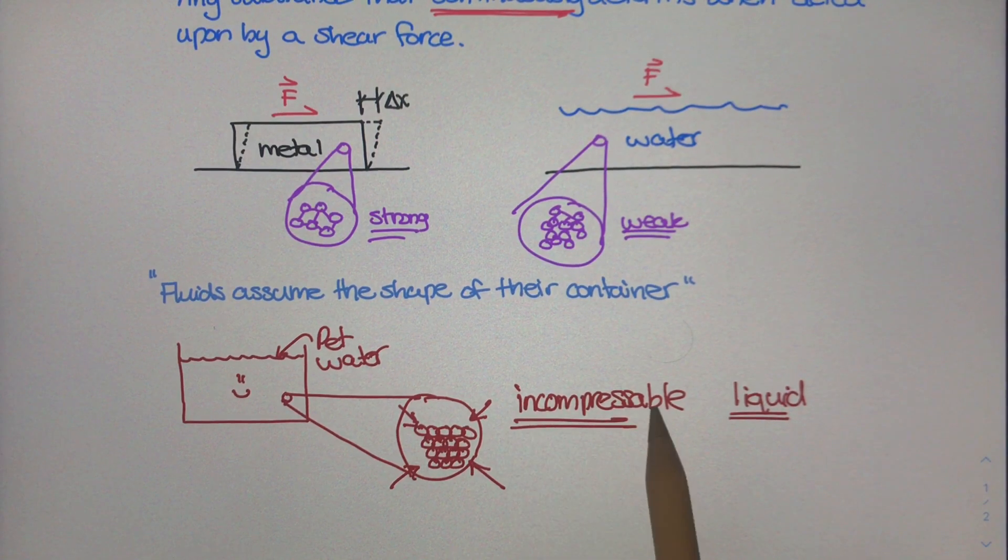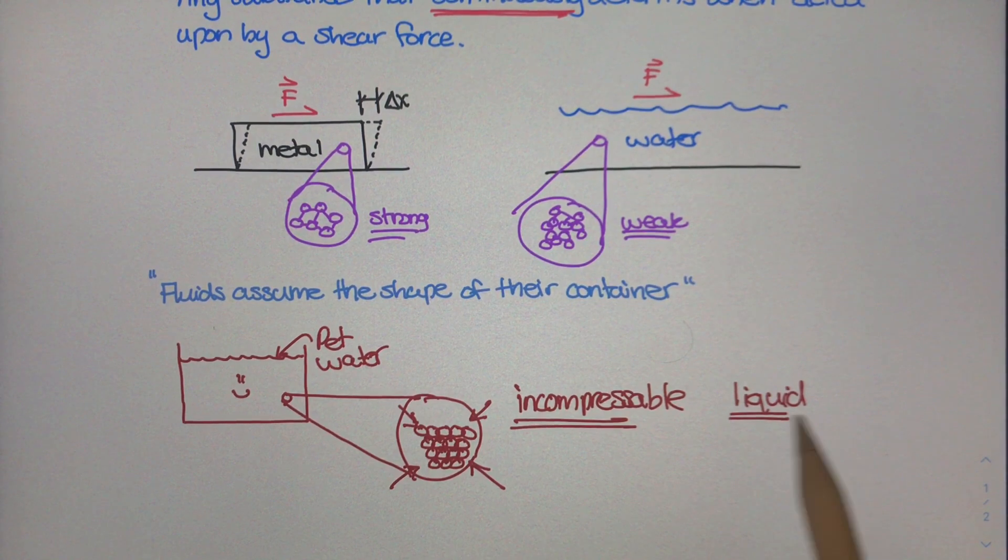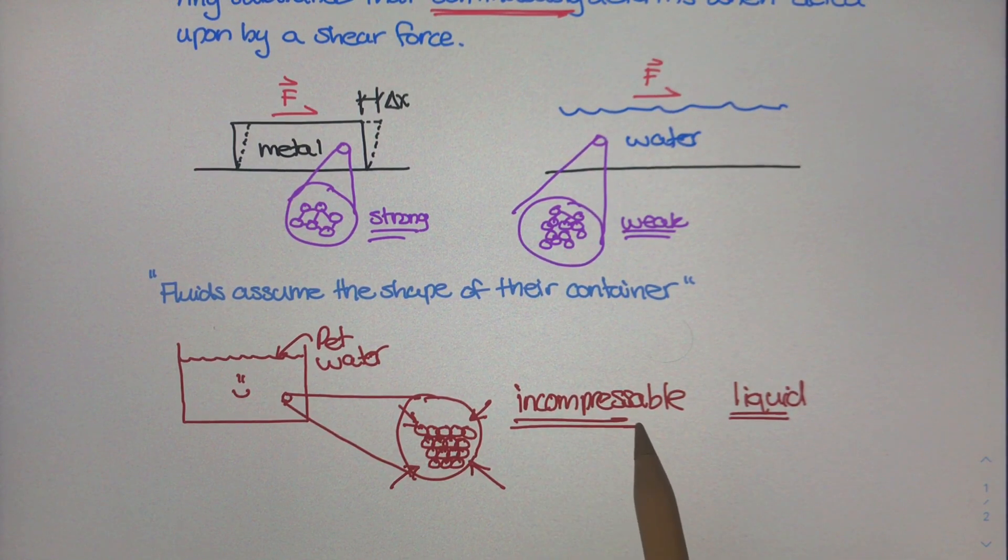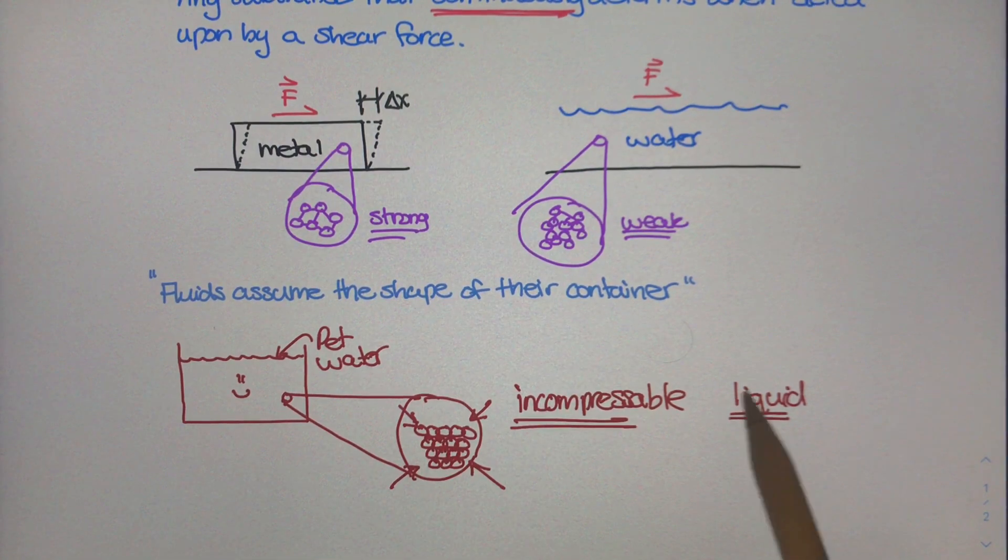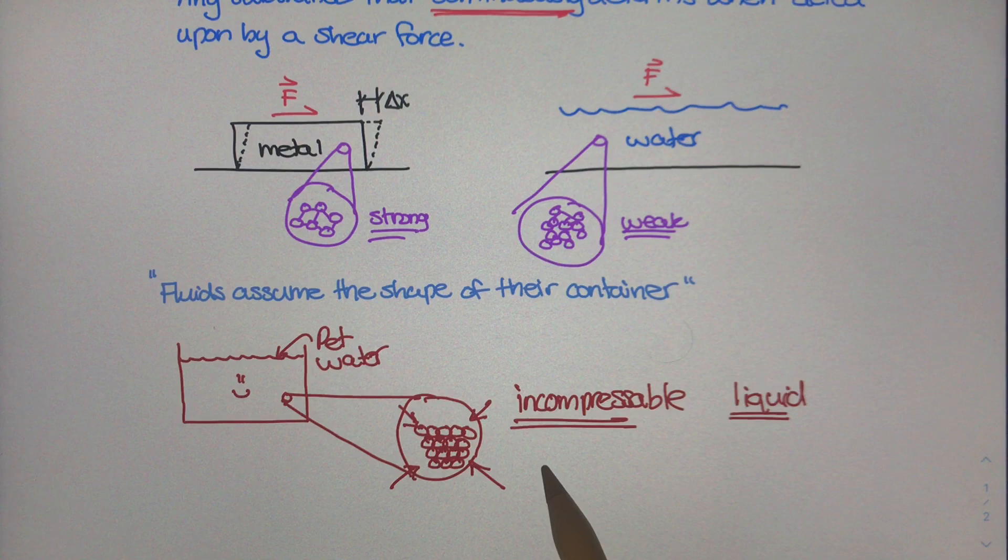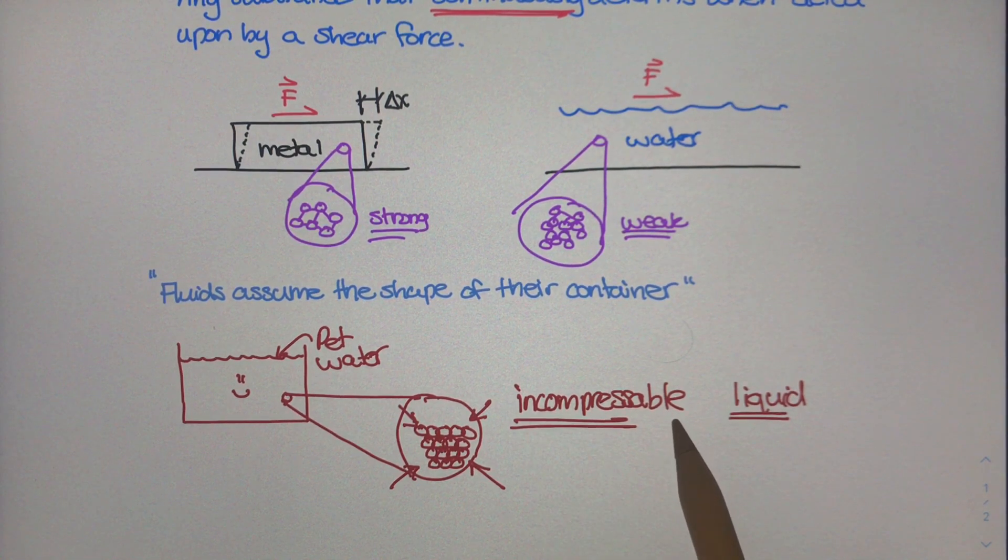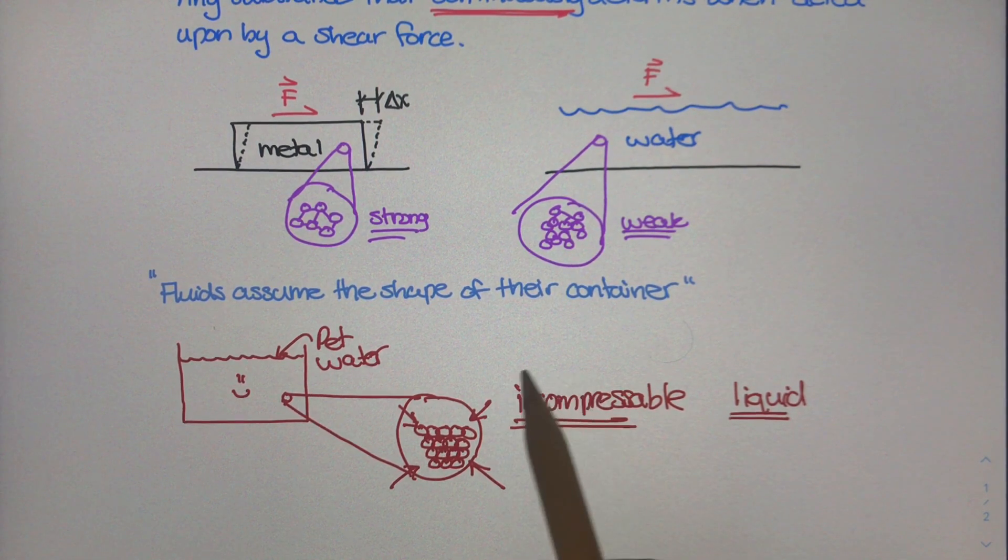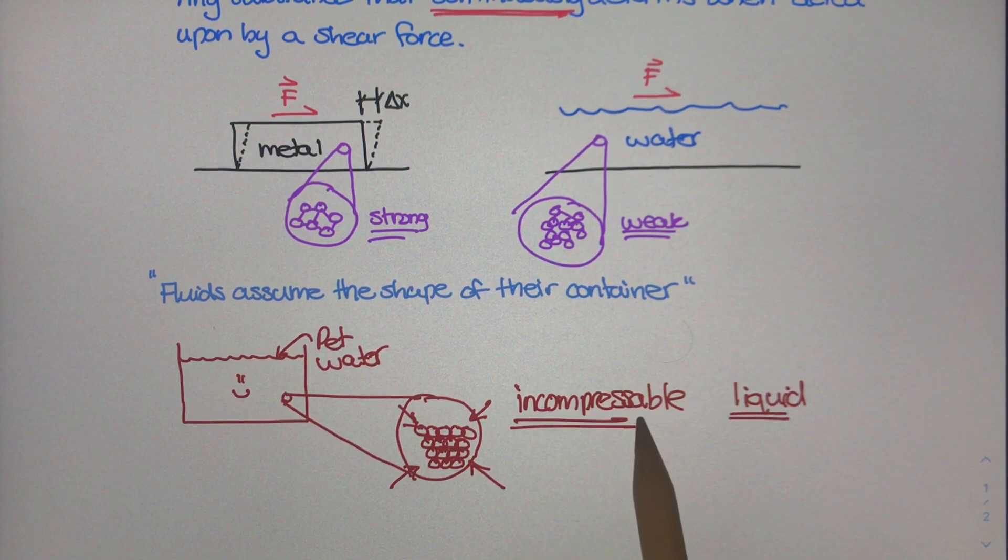So we've talked about incompressible fluids and what a liquid is. Does that mean there are compressible fluids? And does that mean there are other types of fluids? Well, as a surprise to nobody, if there's incompressible fluids, there's probably something known as compressible fluids. And that probably constitutes a separate discussion. So we'll talk about compressible and incompressible fluids and other types of fluids in the next video. See you then.